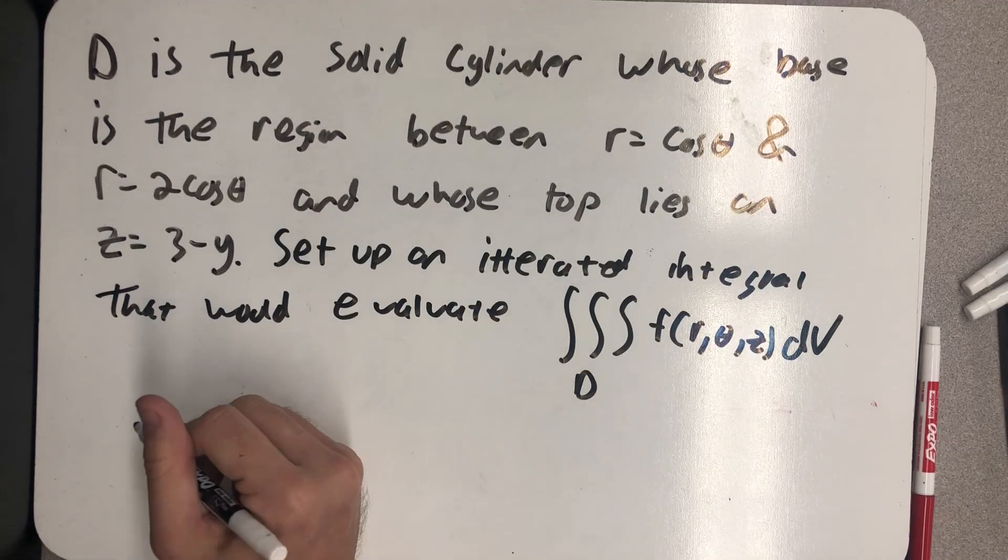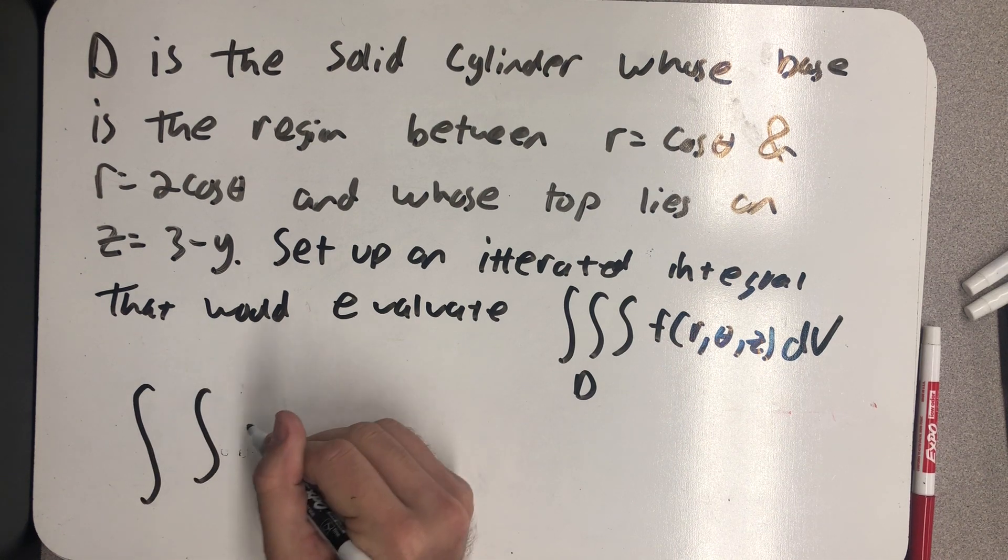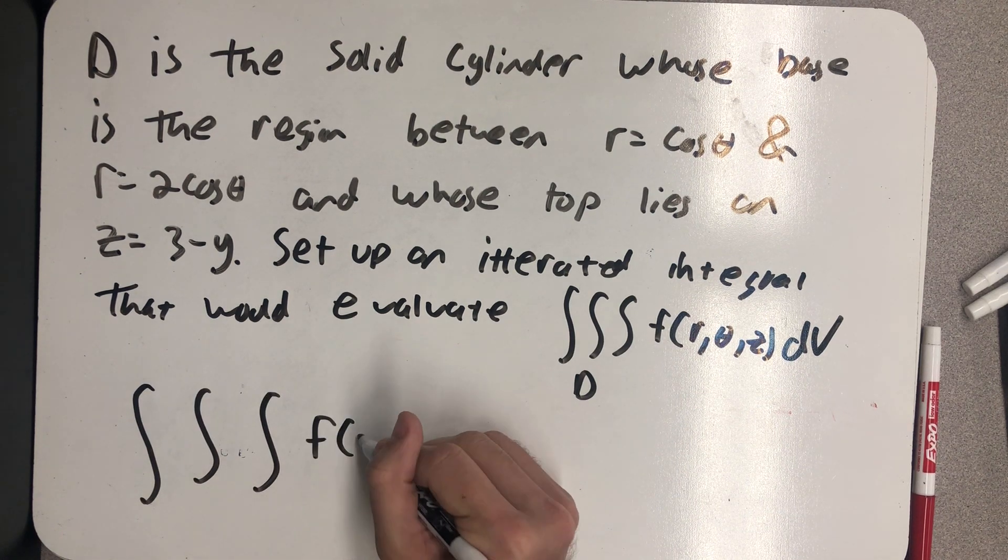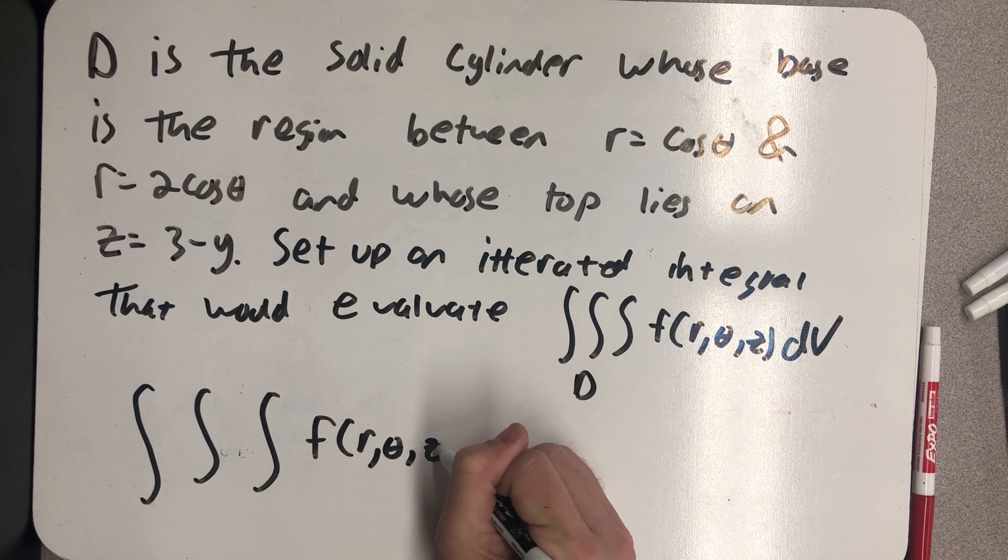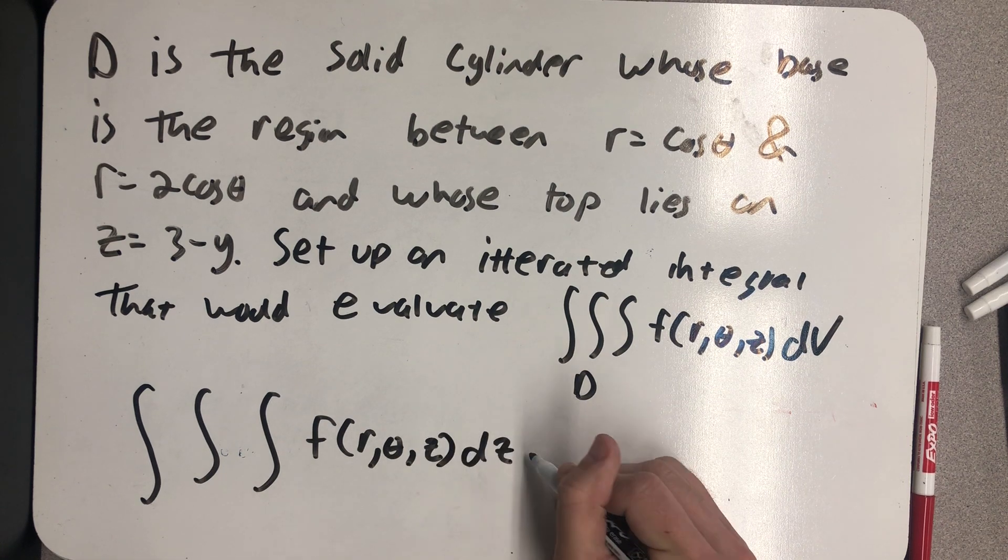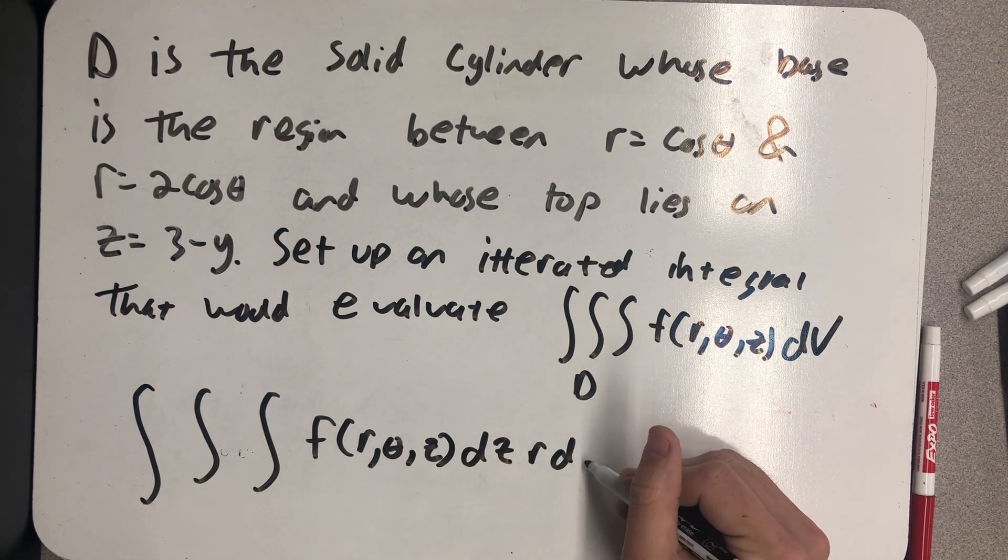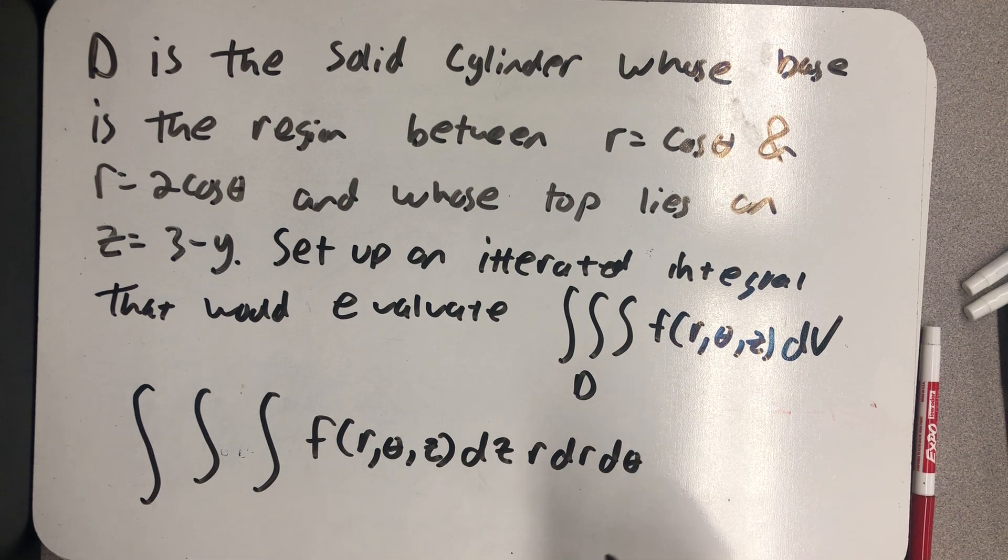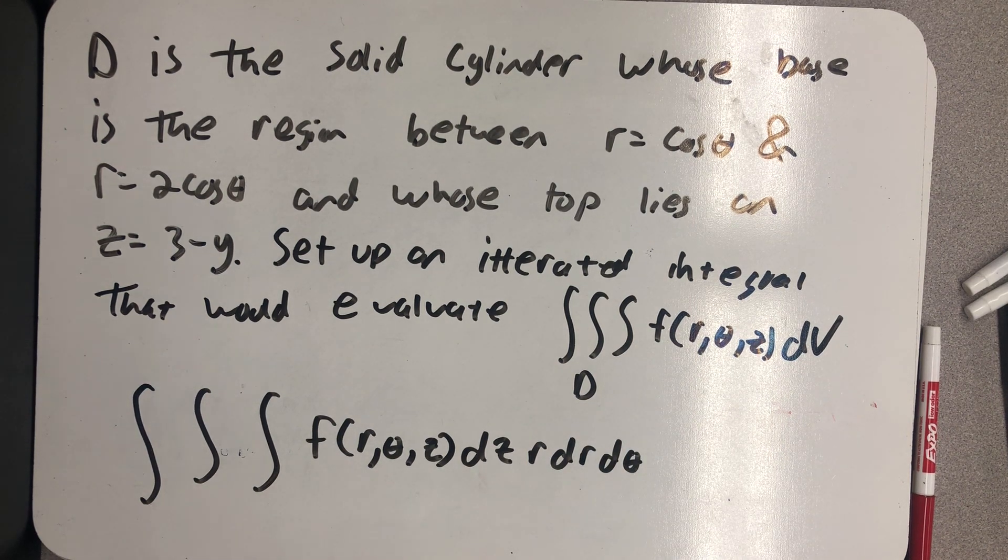Right away, I'm thinking that no matter what the integrand could or would be, we need to write this as dz r dr d theta, giving us an idea of what kind of bounds we're going to be looking at.